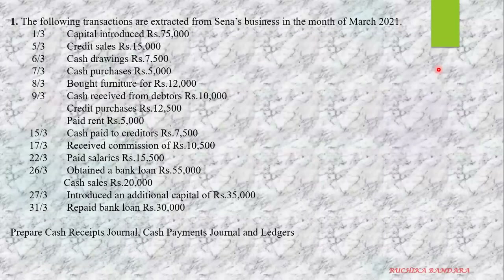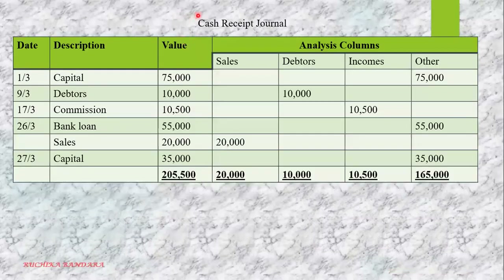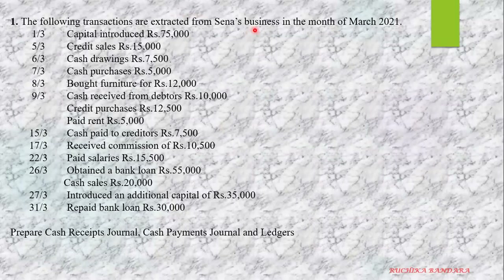Let's go through the transactions one by one. Capital introduced $75,000 — as a business, the owner has invested money, so you are receiving money. Cash receipt journal: capital $75,000, and put it into the other column because it is not sales, debtors, or income. Next, credit sales $15,000 — it's credit sales, you have sold some stock on credit, so you can't put it into the receipt journal.